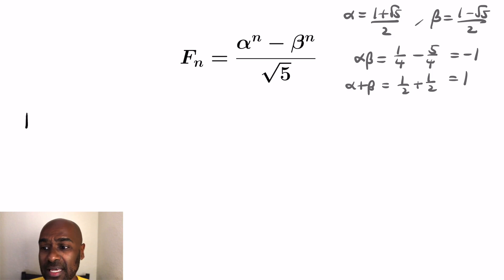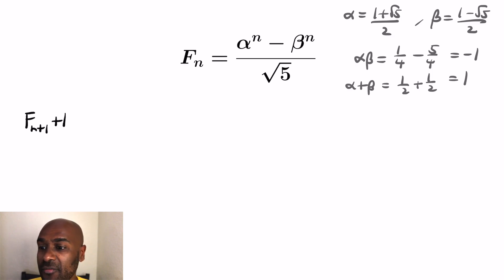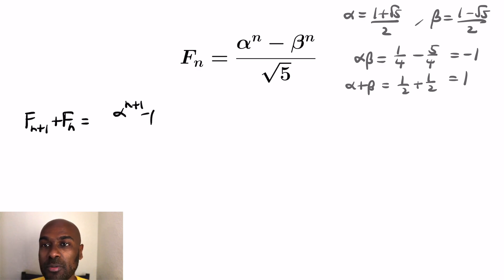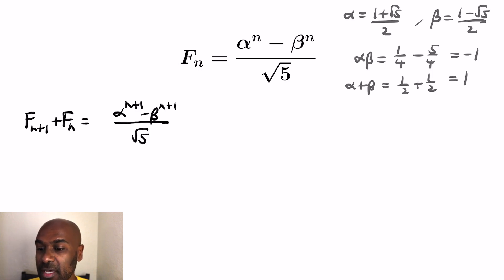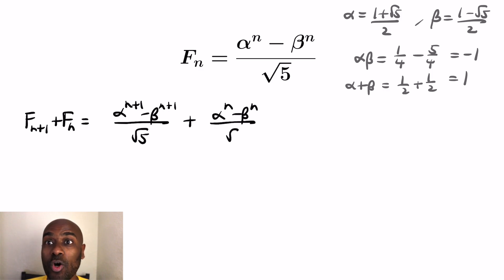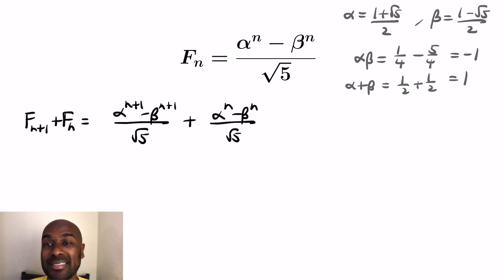So let's go ahead and actually check that this formula works as an explicit formula for the Fibonacci numbers. For small values you can check yourself, but let's check F_(n+1) + F_n. It'll be (alpha^n − beta^n)/√5, and then we add (alpha^n − beta^n)/√5. The hope is that this equals F_(n+2), which is the recursion that the Fibonacci numbers satisfy.